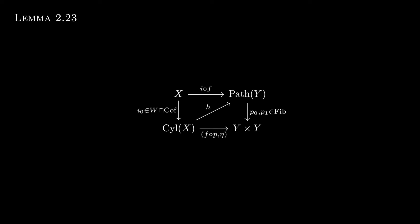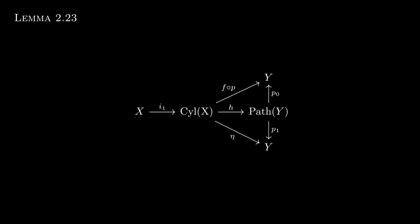So by assumption x is cofibrant, and so the left vertical morphism is an acyclic cofibration. Since the right one is a fibration, we have a lift from cyl x to path y, and just rearranging this gives us a right homotopy with respect to path y.